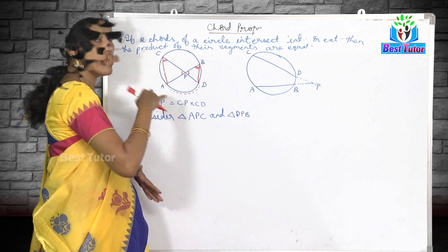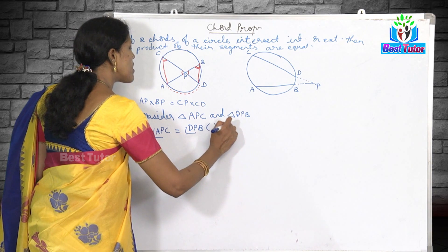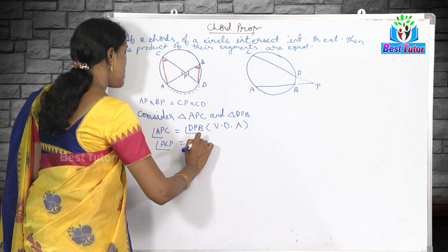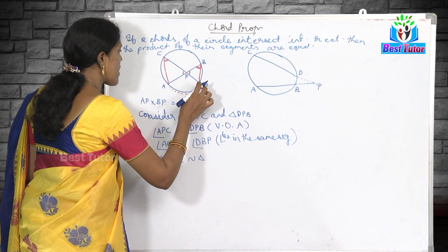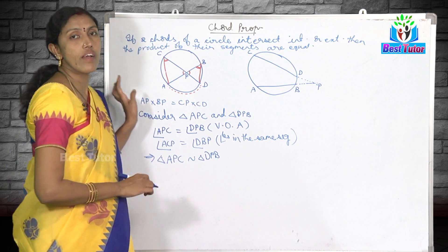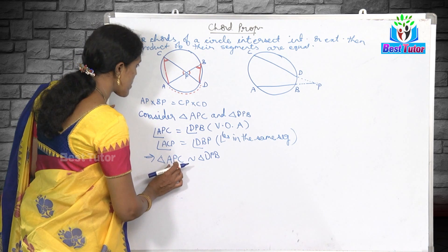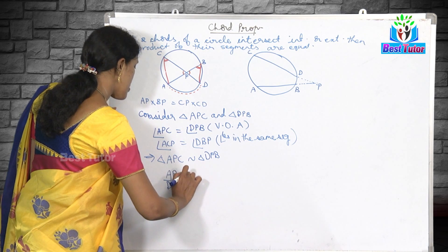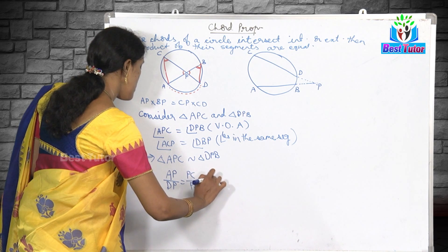So these two triangles are similar by the AA axiom — two triangles are said to be similar if two angles of one triangle are equal to two angles of the other. Angle APC equals angle DPB (vertically opposite angles) and angle ACP equals angle DBP (angles in same segment). Therefore triangle APC is similar to triangle DPB. The corresponding sides are proportional: AP/DP = PC/PB = AC/DB.